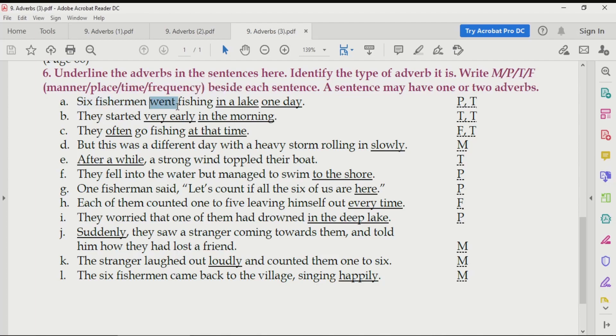Six fishermen went fishing. Now, some of you may want to ask, where did they go for fishing? Or, some of you may also want to ask, how many times do they go for fishing? Some of you may also want to ask, when did they go for fishing? So, over here, to add something more to this sentence, we have these adverbs. Six fishermen went fishing in a lake one day. We have two adverbs over here. In a lake, it is a place. So, we will write P over here. One day is time. So, we will write T over here.